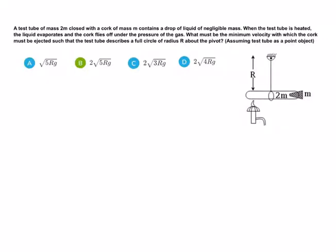Hello everyone, welcome back. A test tube of mass 2m, closed with a cork of mass m, contains a drop of liquid of negligible mass. When the test tube is heated, the liquid evaporates and the cork flies off under the pressure of the gas. What must be the minimum velocity with which the cork must be ejected such that the test tube describes a full circle of radius R about the pivot?